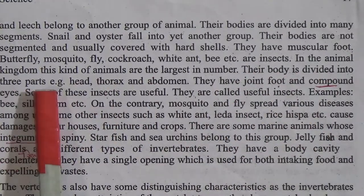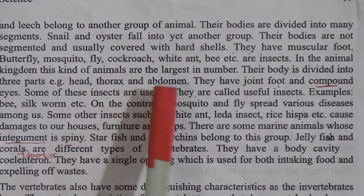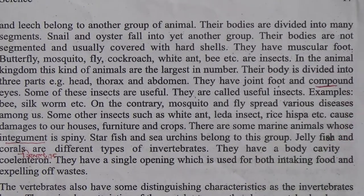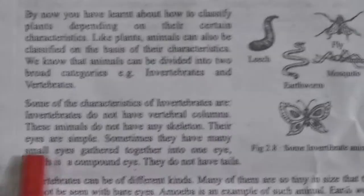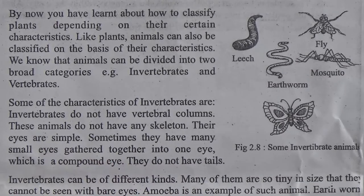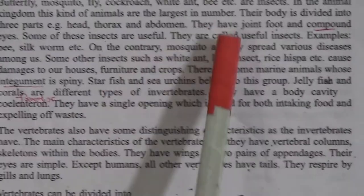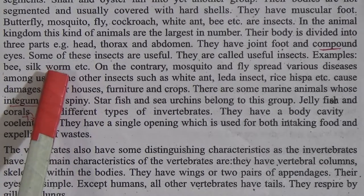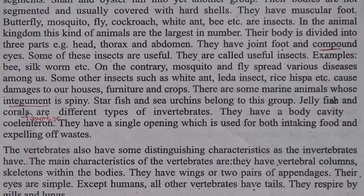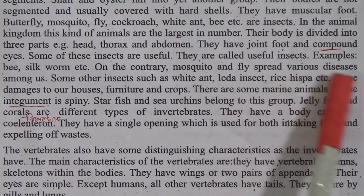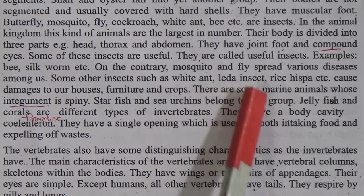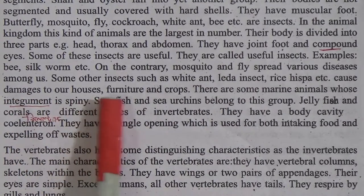The body of an insect is divided into three parts: head, thorax and abdomen. They have jointed legs and compound eyes. Compound eyes means many small eyes gathered together into one eye. Some insects are useful, like bees and silkworms — from bees we get honey, and from silkworms we get silk cloth. On the contrary, mosquitoes and flies spread various diseases. Some other insects such as white ants, rice hispa, etc. cause damage to our houses, furniture and clothes.